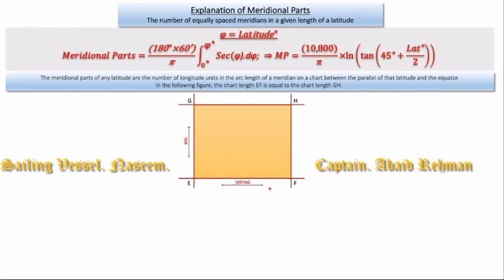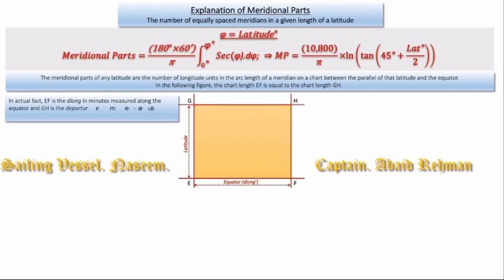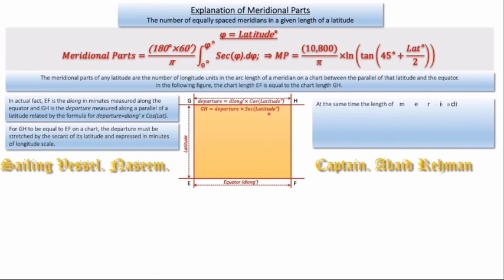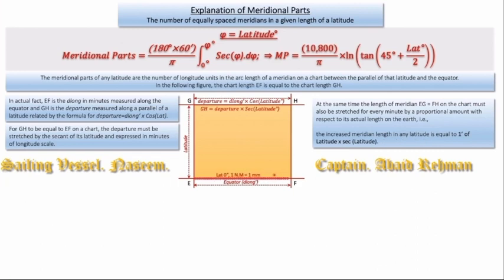In the following diagram, the chart length EF is equal to the chart length GH. In actual fact, EF is the D-long in minutes measured along the equator, and GH is the departure measured along the parallel of latitude, related by the formula: departure equals D-long times cosine of latitude. For GH to be equal to EF on a chart, the departure must be stretched by the secant of its latitude and expressed in minutes of longitude scale. At the same time, the length of meridian EH, which is equal to FH on the chart, must also be stretched for every minute by a proportional amount with respect to its actual length on the Earth. That is, the increased meridian length at any latitude is equal to one minute of latitude times the secant of that latitude.